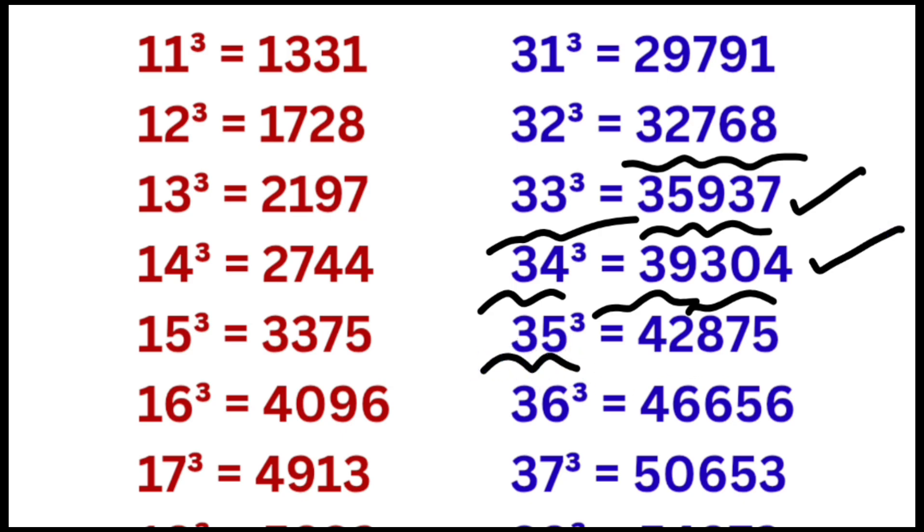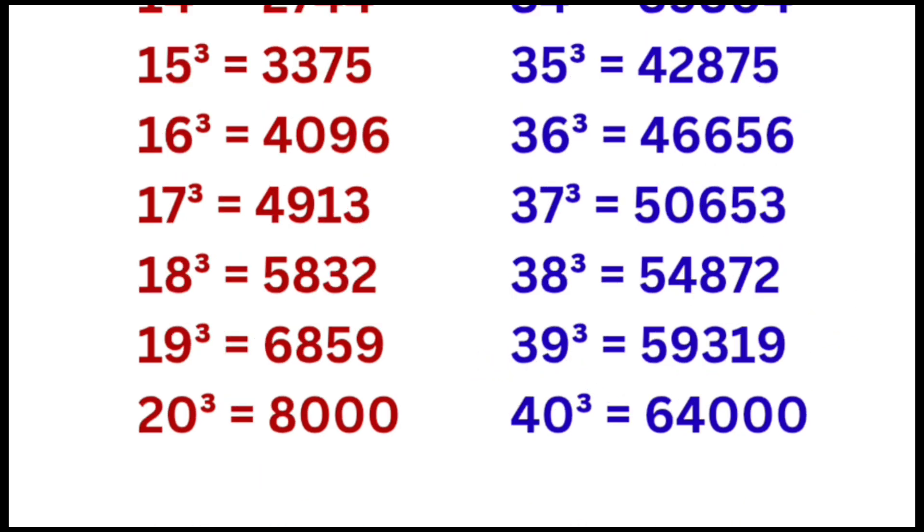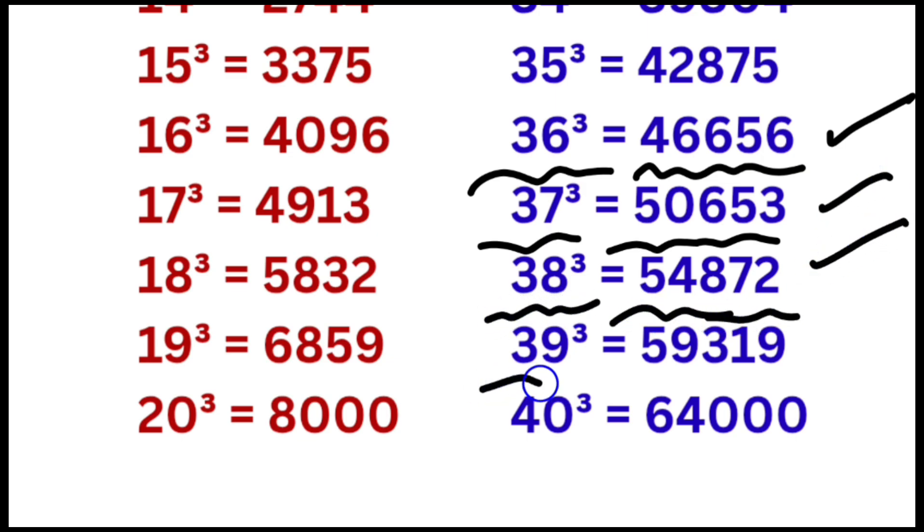Cube of 35 is equal to 42875, cube of 36 is equal to 46656, cube of 37 is equal to 50653, cube of 38 is equal to 54872, cube of 39 is equal to 59319, cube of 40 is equal to 64000.